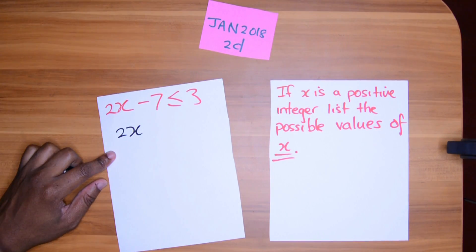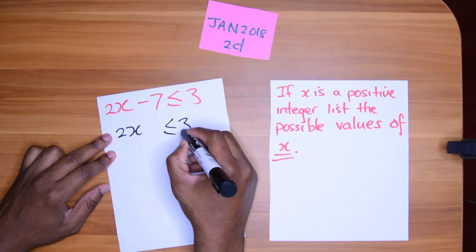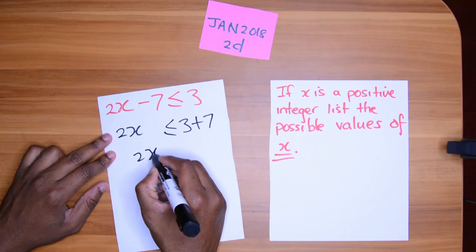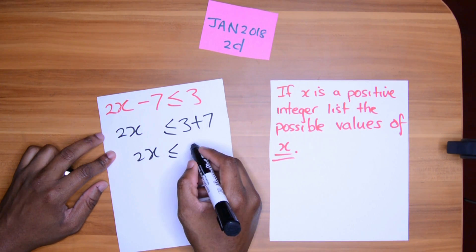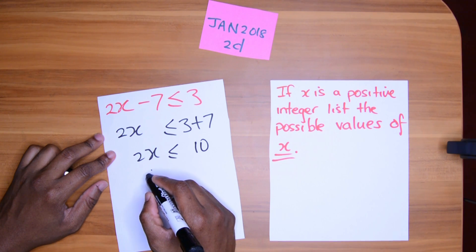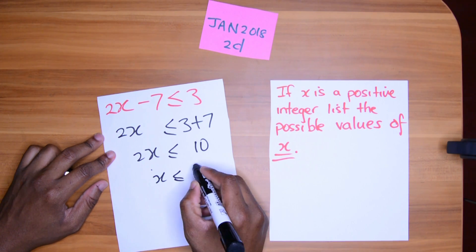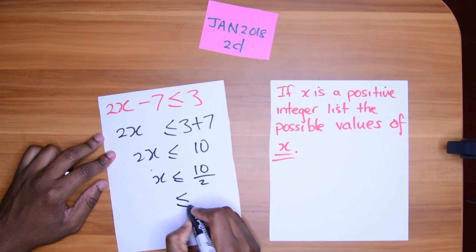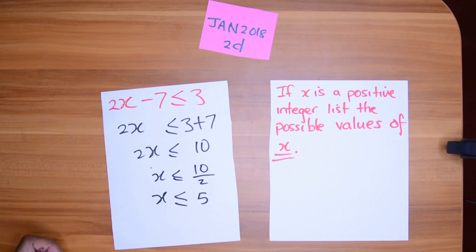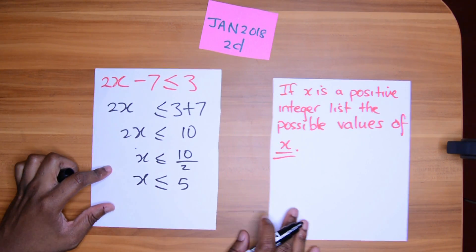So 2x, 2x, bring across the 7. And we will get less than 3 plus 7. 2x is less than or equal to 10. So x is less than or equal to 10 over 2 is less than or equal to 5. No switching of these signs because we didn't do any fishy business.